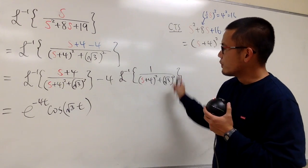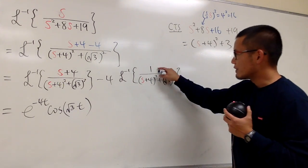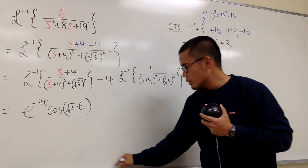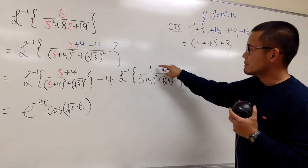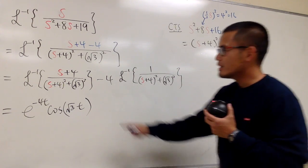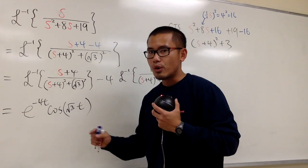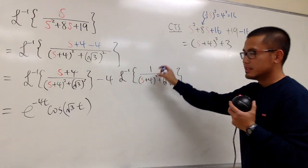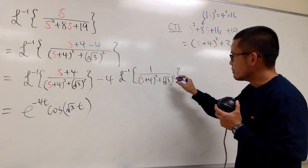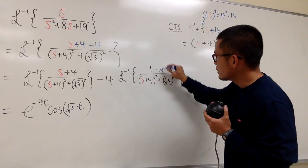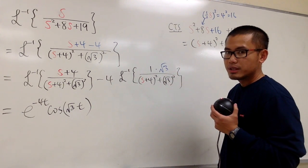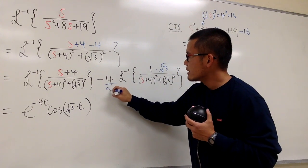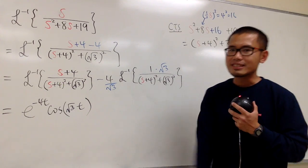And then for this right here, you know you have a constant on the top, so you have to make sure you must match this right here. Earlier for cosine, you match the s plus 4, which is great. But this is the sine situation, you have to match the square root of 3. So let's go ahead, multiply the top by square root of 3 and then divide that square root of 3 so that we can pretend nothing happened.